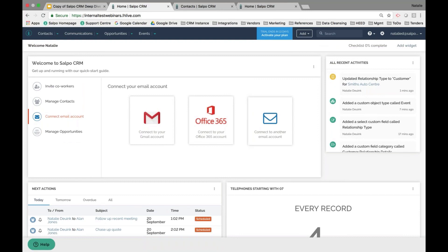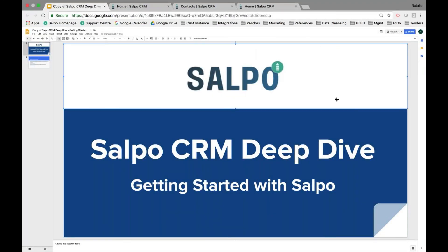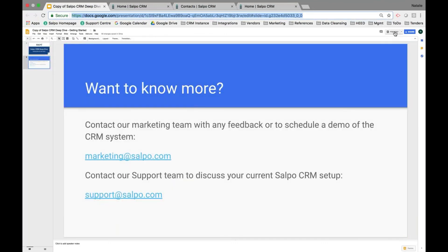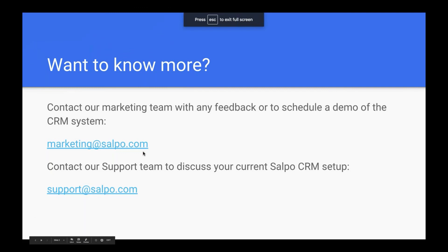That's how you'll get started with Salpo. Your trial lasts 14 days, so please take as much advantage of it as possible — play around in the system and get used to the functionality. If you have any questions as a new Salpo user or are interested in learning more, reach out to marketing@salpo.com. For existing users or any support questions, reach out to support@salpo.com, and one of our knowledgeable team members will be there to assist. Thanks for joining, and we look forward to hearing from you soon.